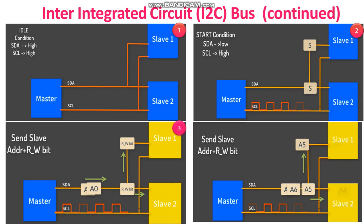Next, the master device sends the read or write bit — for a read operation the bit value is 1, and for a write operation the bit value is 0. According to the requirement, the master device sends this value. The master device then sends the 7-bit address of the slave device it wants to communicate with over the SDA line. Clock pulses are generated on the SCL line, synchronizing the bit reception by the slave device.